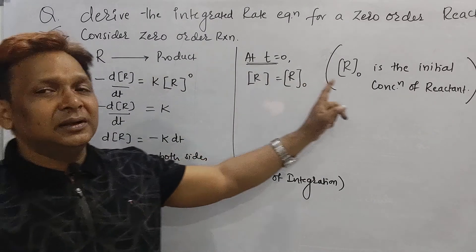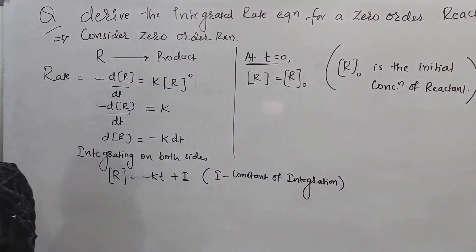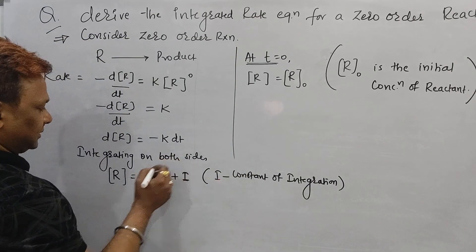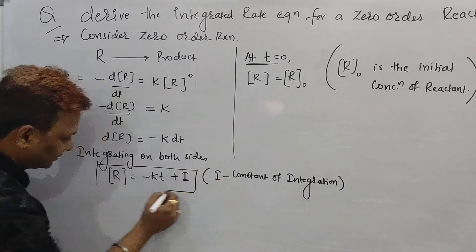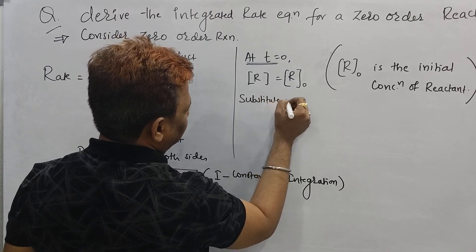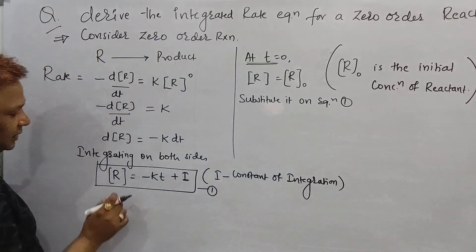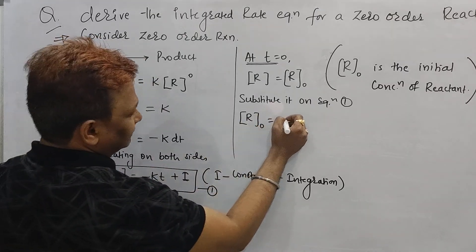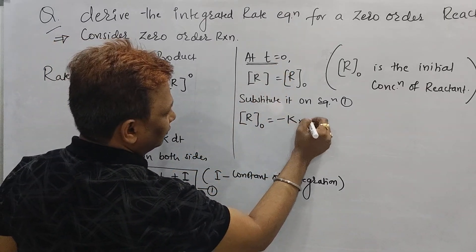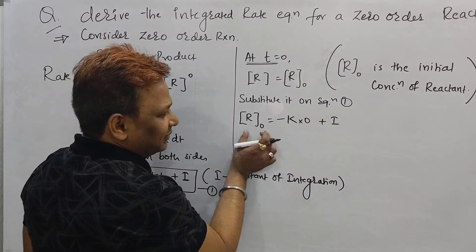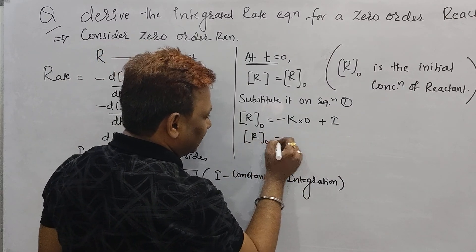Now substitute T = 0 and R = R₀ into equation 1. We get R₀ = minus K times 0 plus I, which gives us R₀ = I. So the concentration R₀ is equal to I, the integration constant.